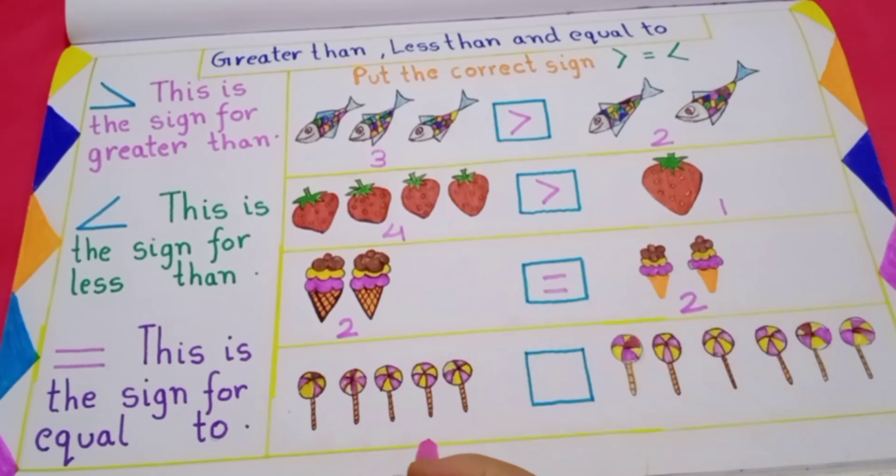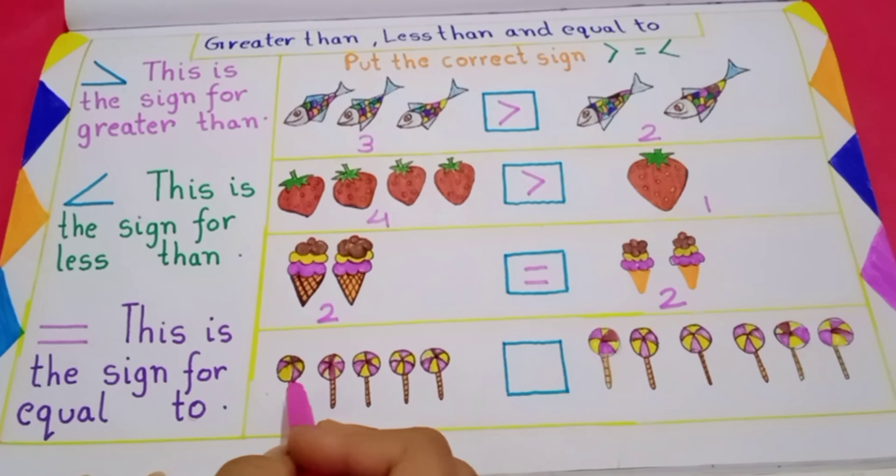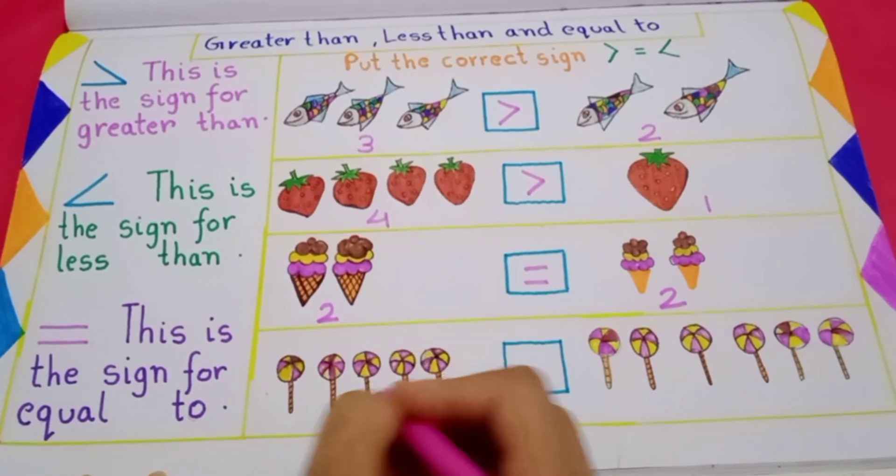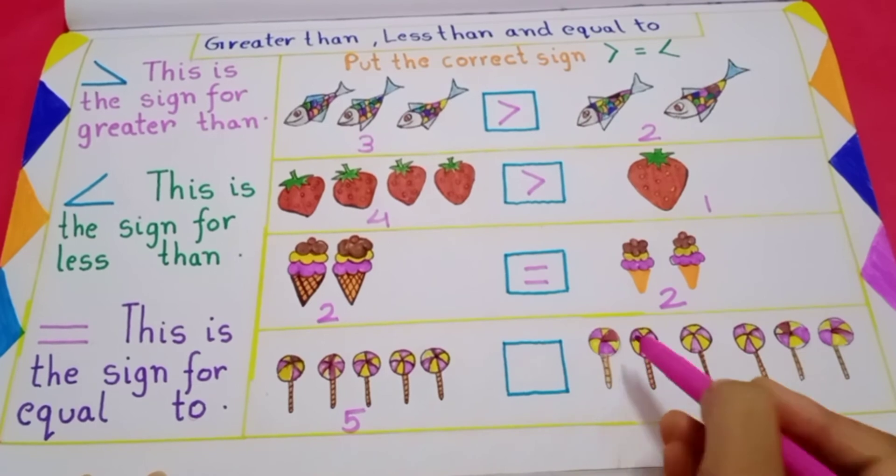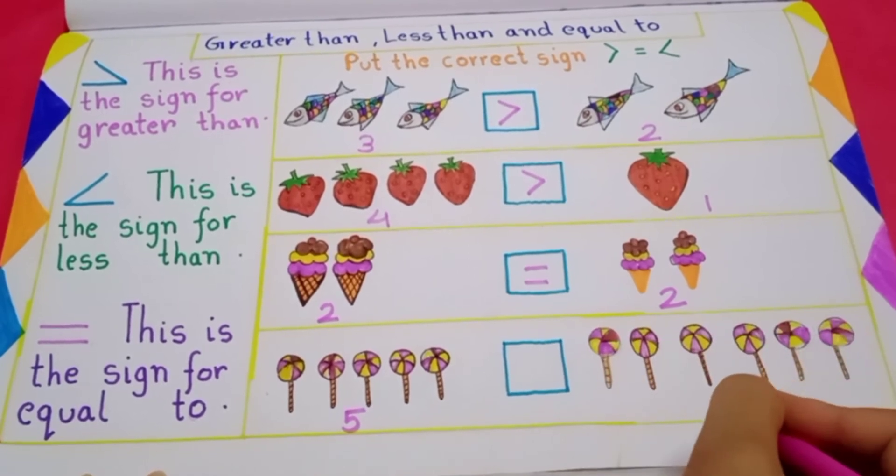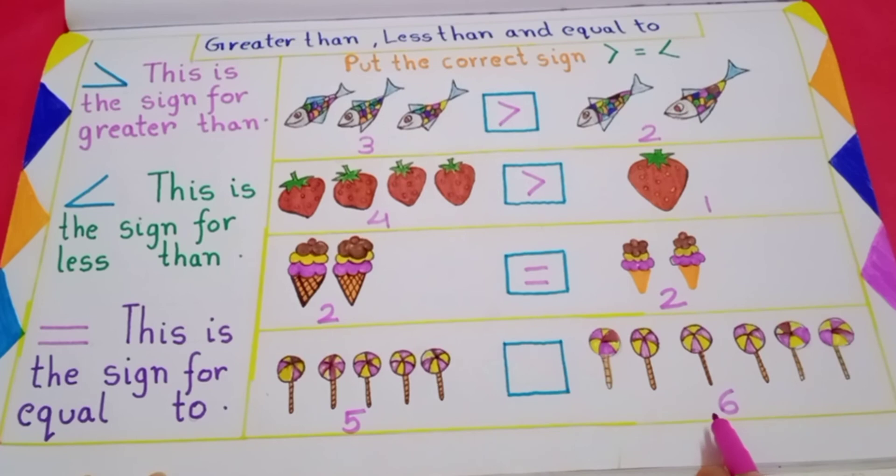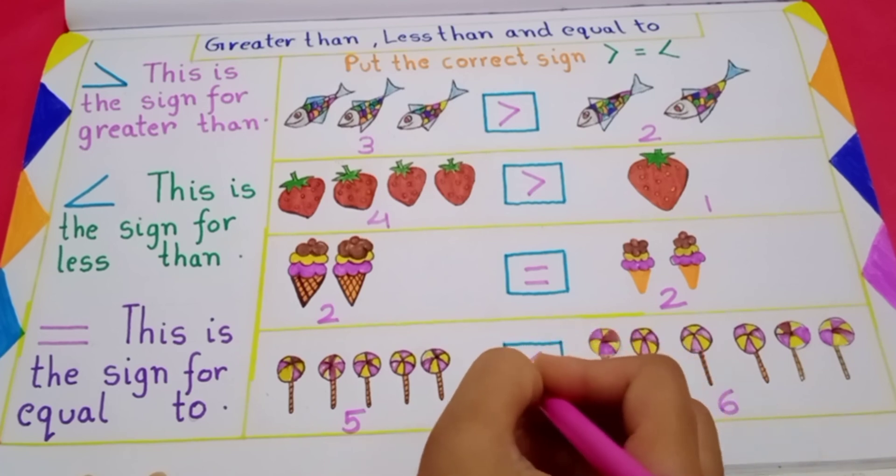Come to the last question. Here you can see 1, 2, 3, 4, 5. 5 candies. And this side you can see, 1, 2, 3, 4, 5, 6. 6 candies. Now tell me, 5 is more or 6 is more? Yes, 6 is more. That means, 5 is less than 6. So put less than sign.